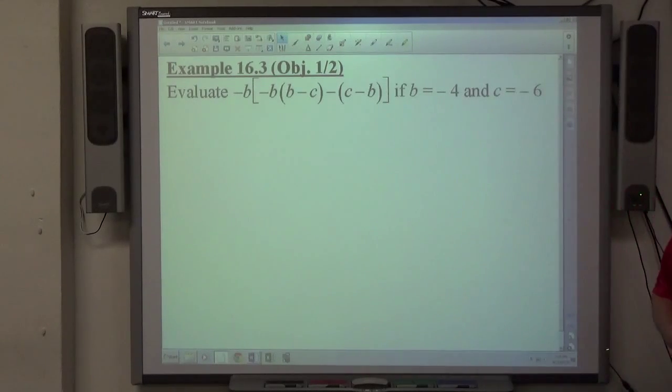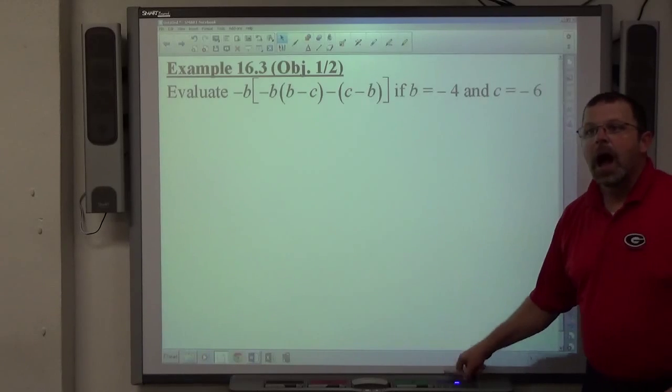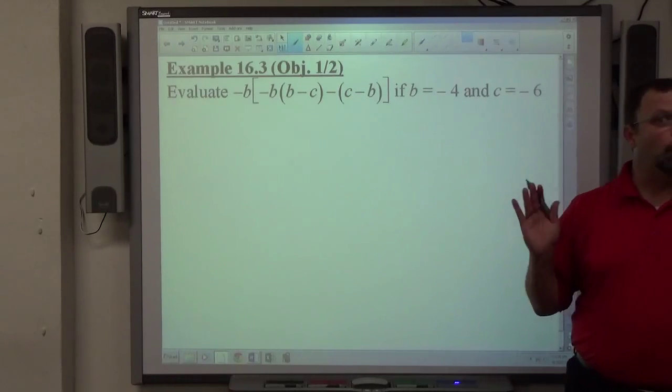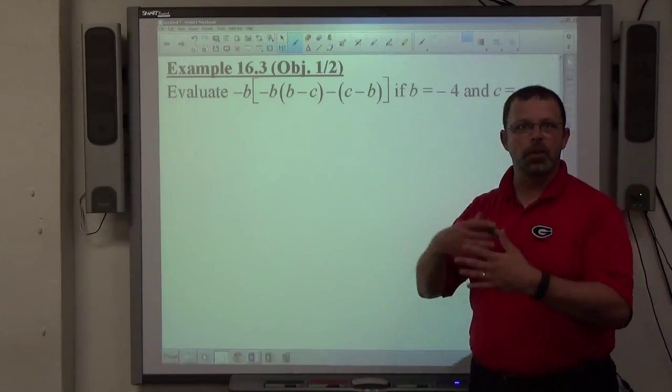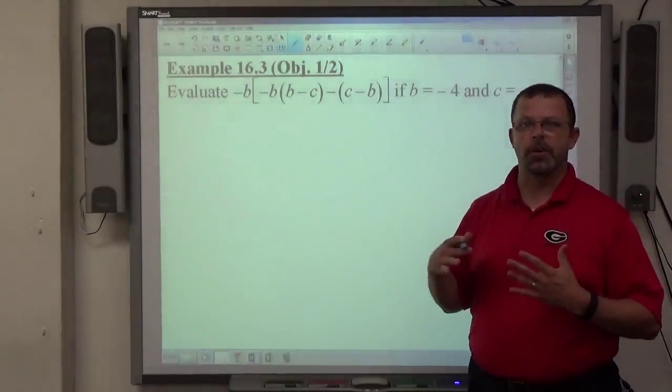Okay, final example today. Negative b bracket negative b times b minus c minus c minus b. I want to show you one other thing you could do if you wish. This is not a requirement, but this is another way to tackle this kind of problem that you might prefer.